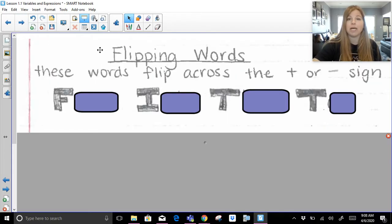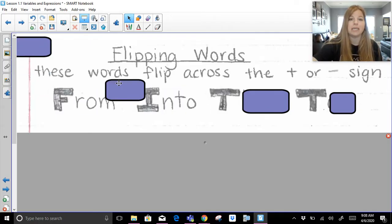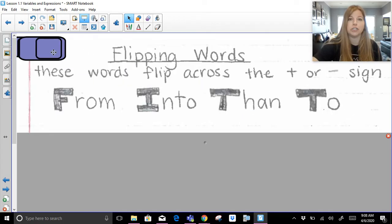Now when we start translating we have to know the four flipping words. The four flipping words are from, into, then, and to. These words, if we see them in an expression, tell us to flip the values across the plus or minus sign. So if I said 3 is subtracted from 10, that would really mean 10 minus 3. The 10 and the 3 would get flipped. If I said 2 is being subtracted from 7, that would mean 7 minus 2.